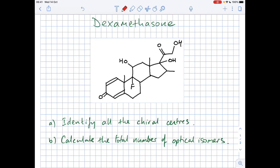I've got a quick video here on identification of chiral centres in quite a nasty looking molecule. The molecule, if you're interested, is dexamethasone. It's actually used in the treatment of COVID-19, so very topical at the moment.